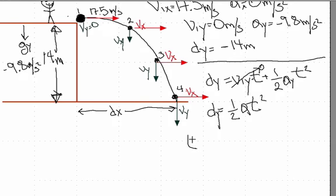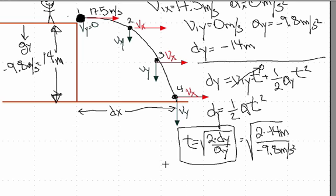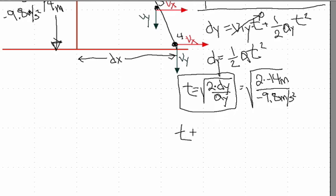Solving for time gives us: t equals the square root of 2 times dy over ay. This is a good equation to memorize — you can use it repeatedly in similar problems. Plugging in our numbers: t equals the square root of 2 times negative 14 meters over negative 9.8 meters per second squared, which gives us a time of 1.69 seconds.